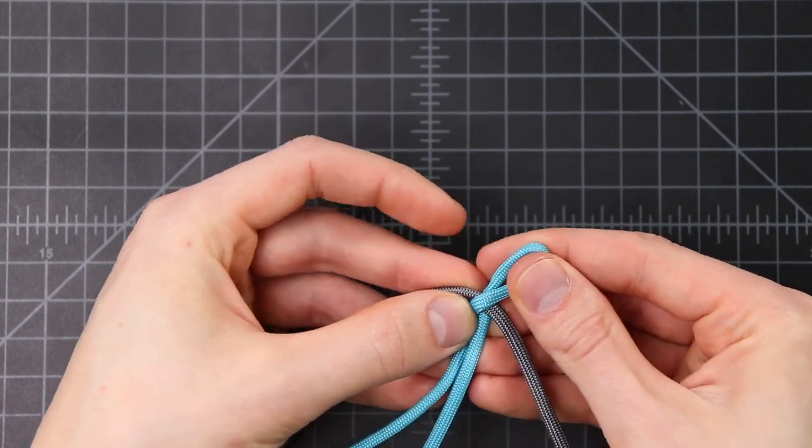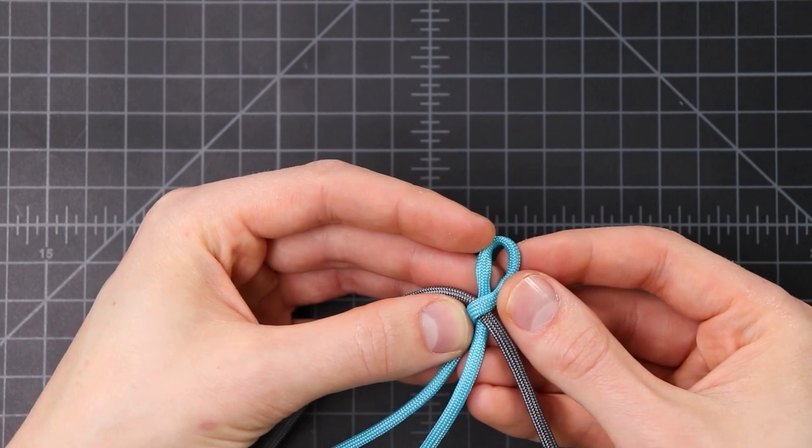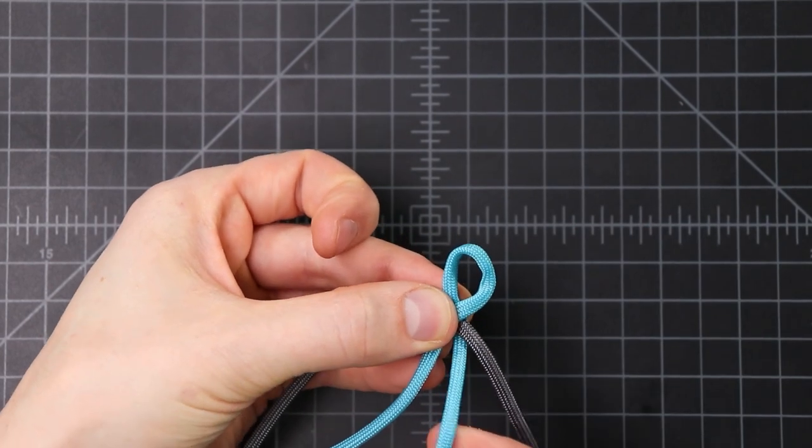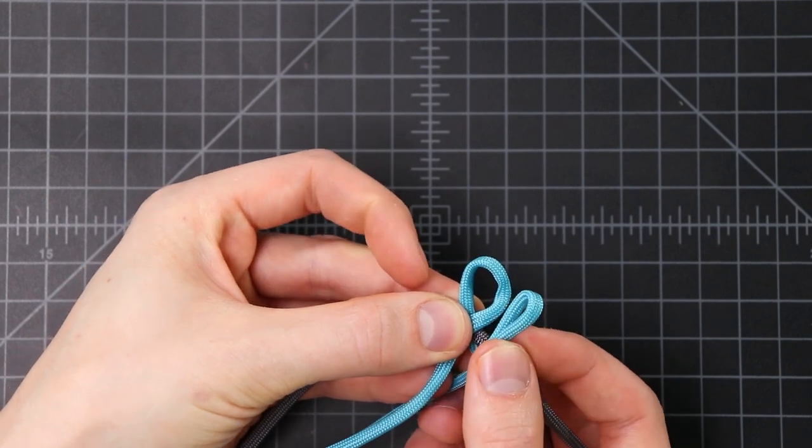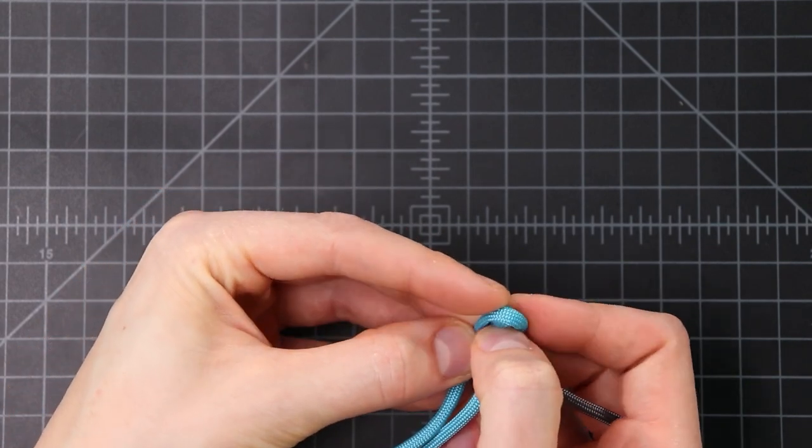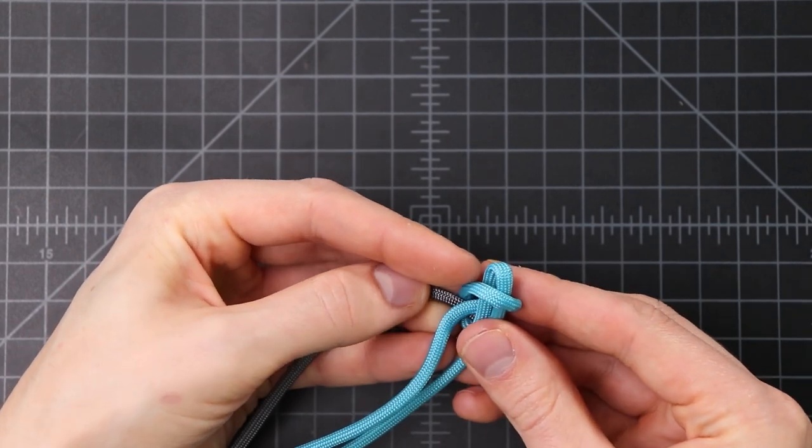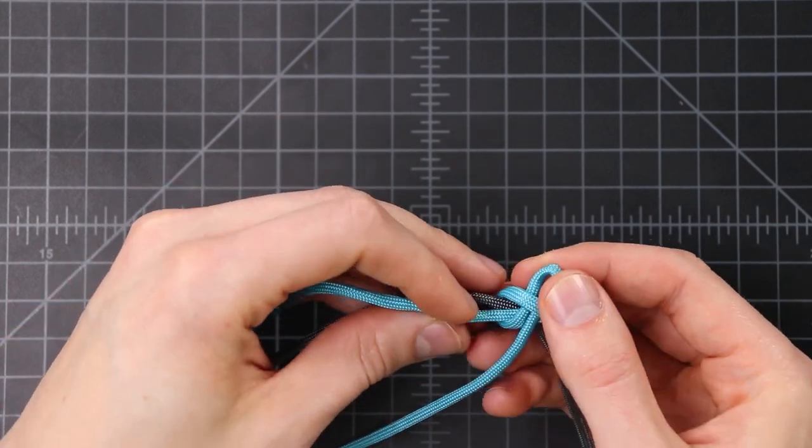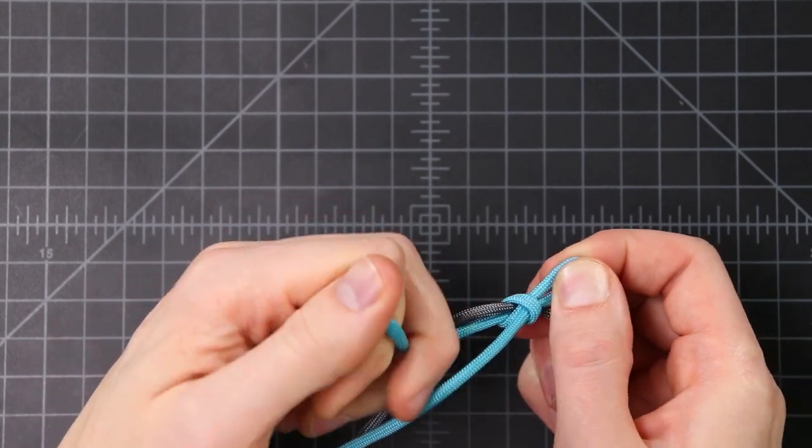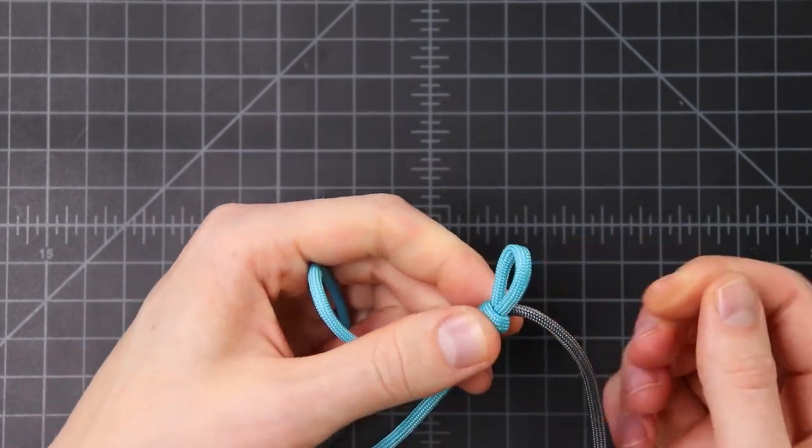And then we're going to give it a twist to the side. Take our cord that goes underneath, fold that over again and put it through the loop. Then we can pull this knot to tighten that down and we have a closed loop.